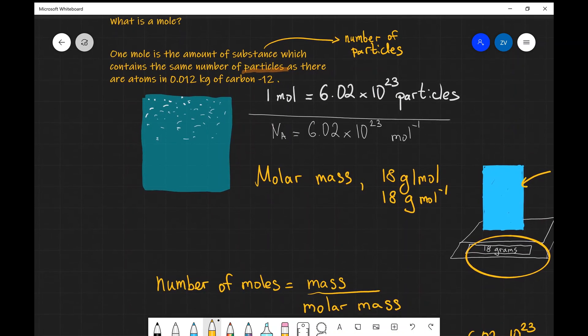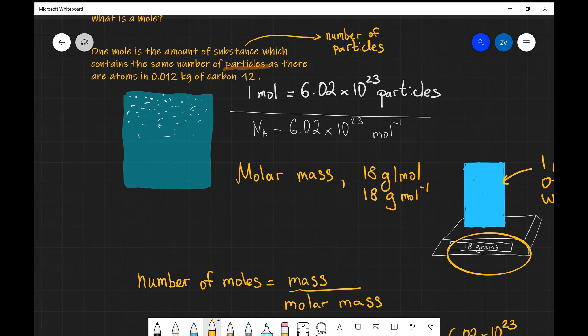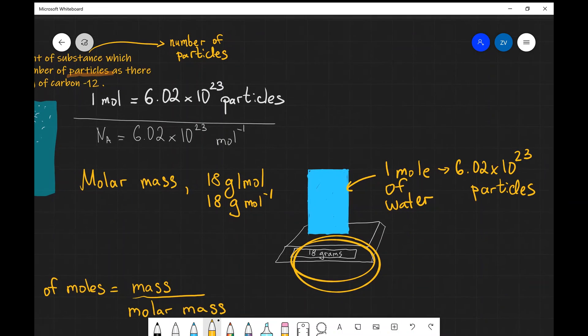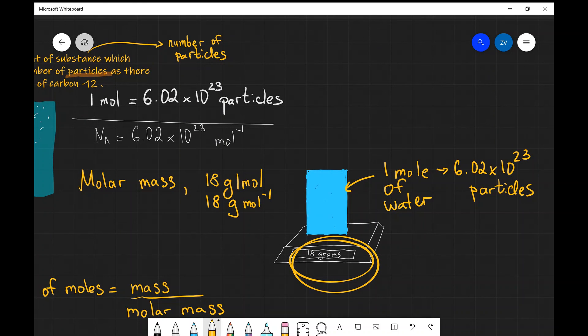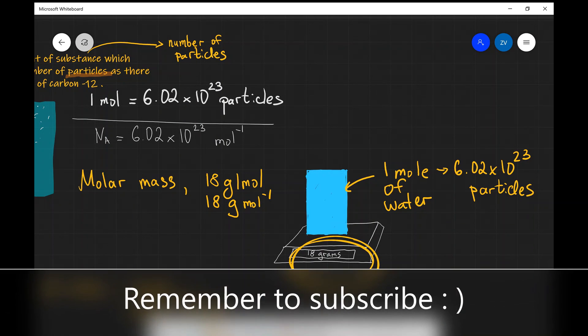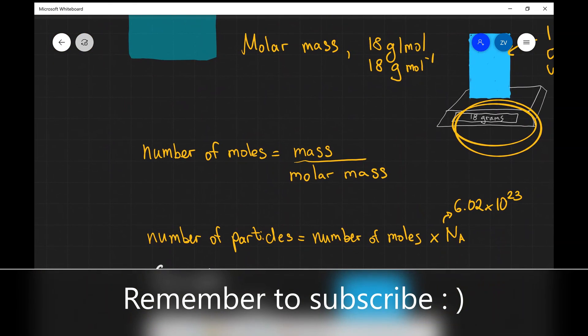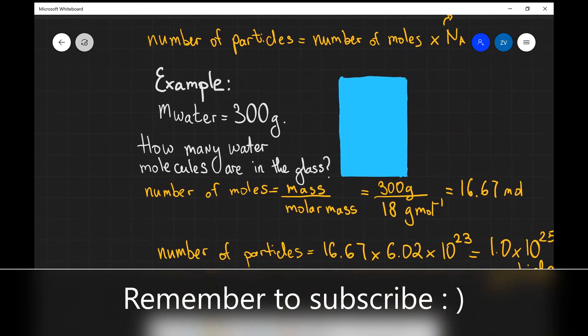We've also explained the concept of molar mass. How many grams does it take to make up a mole? For example, the molar mass of water is 18 grams per mole. That means if we had 18 grams of water, then we'd have one mole. And one mole contains exactly 6.02 times 10 to the power of 23 particles. We've summarized this into those two equations, and we've applied this to an example.